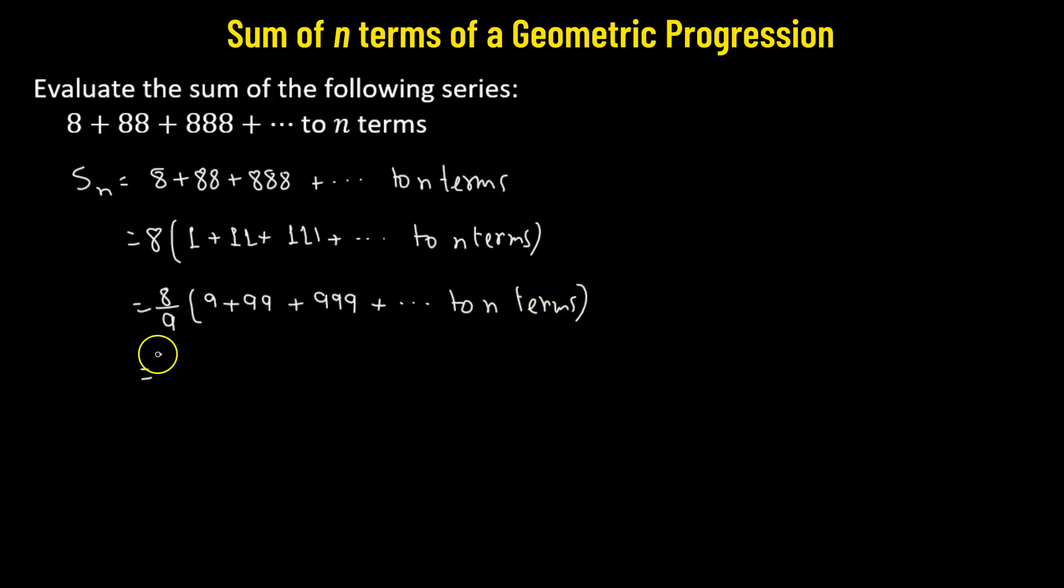Next we can rewrite our terms: 9 as 10 minus 1, we can rewrite 99 as 100 minus 1 or 10 squared minus 1, then 999 can also be expressed as 1000 minus 1 or 10 cubed minus 1. This also goes up to n number of terms.